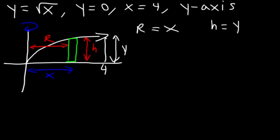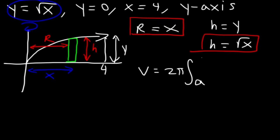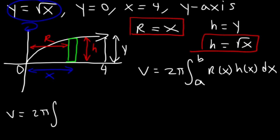Since we're rotating about the y-axis, the radius and the height have to be in terms of x. The radius is already in terms of x. We just need to convert y into something in terms of x. We know that y = √x, so we can replace y with √x, giving us h in terms of x. Now let's use the formula: the volume equals 2π times the integration from a to b of r(x) times h(x) dx. With a = 0 and b = 4, we integrate from 0 to 4, with radius x and height √x.